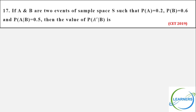People who are connected, please try to do this CET 2019 question. If A and B are two events of a sample space such that P(A) = 0.2, P(B) = 0.6 and P(A|B) = 0.5, then the value of P(A'|B). I can give you a hint — use property 3.